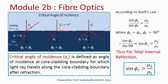So this is the definition of critical angle of incidence. It is defined as the angle of incidence at the core-cladding boundary for which the light ray travels along the core-cladding boundary after refraction. In other words, it is the angle of incidence at the core-cladding boundary for which the angle of refraction is equal to 90 degrees.